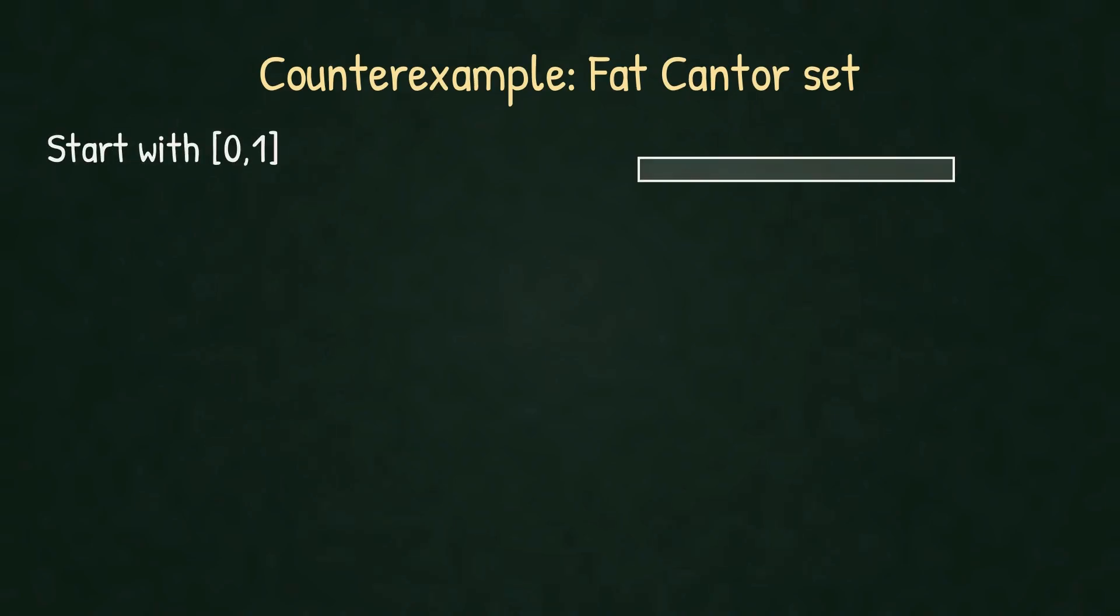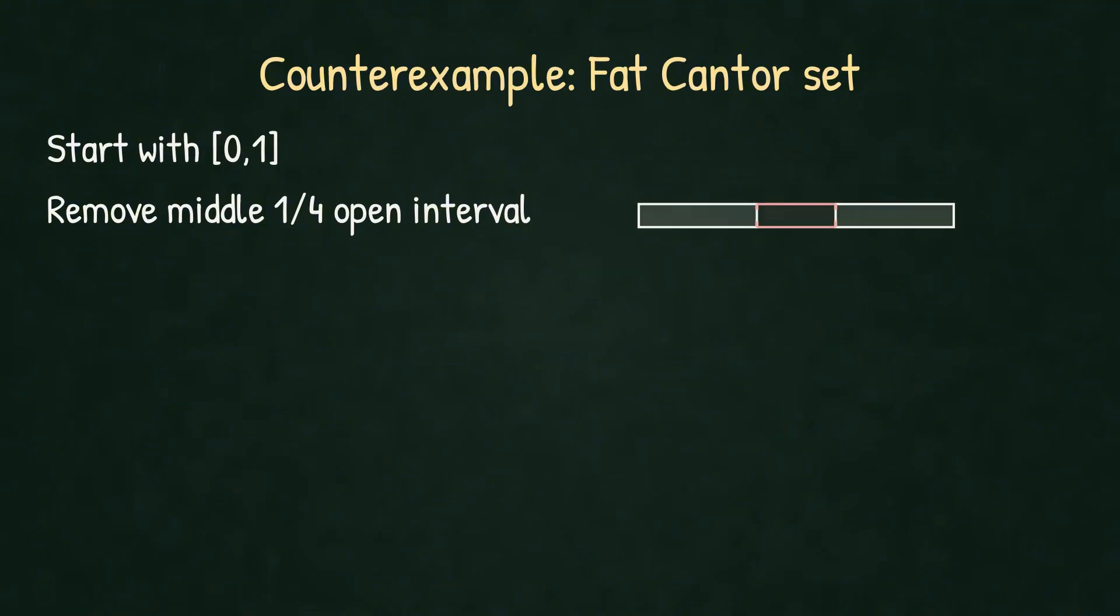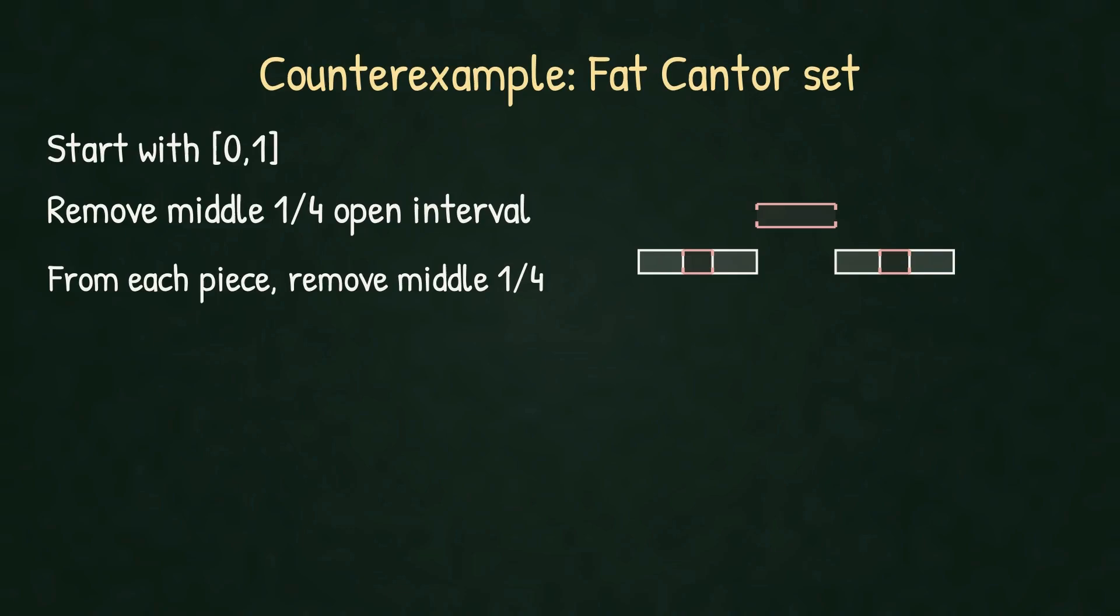Not quite. Here's the counterexample: the fat Cantor set. Start with the interval [0,1]. Remove the middle quarter, an open interval. From each remaining piece, remove the middle quarter and repeat this forever.